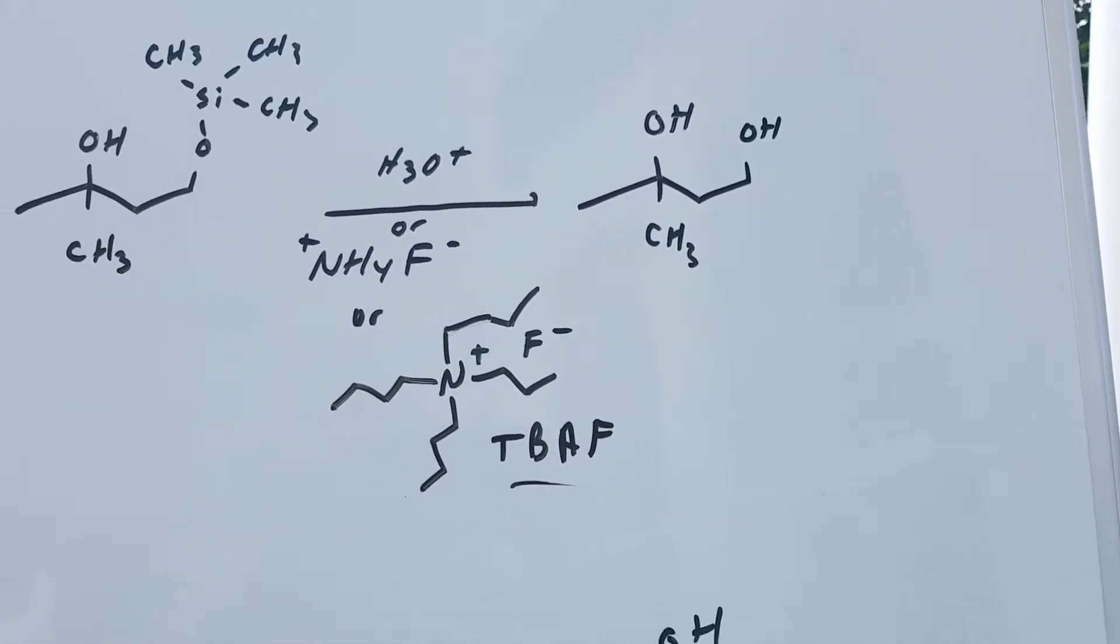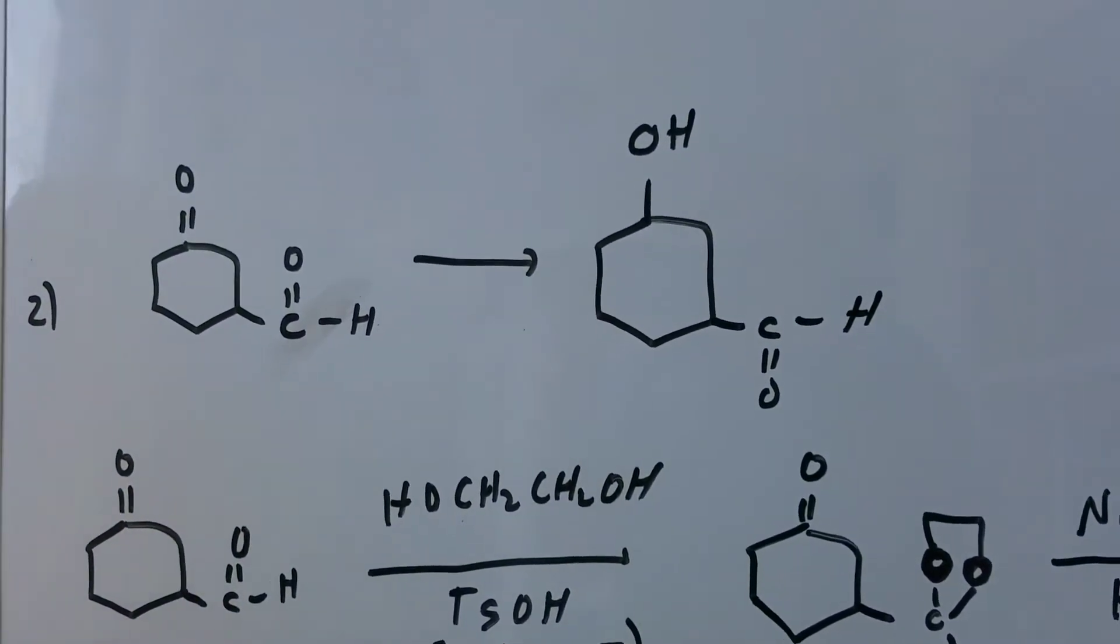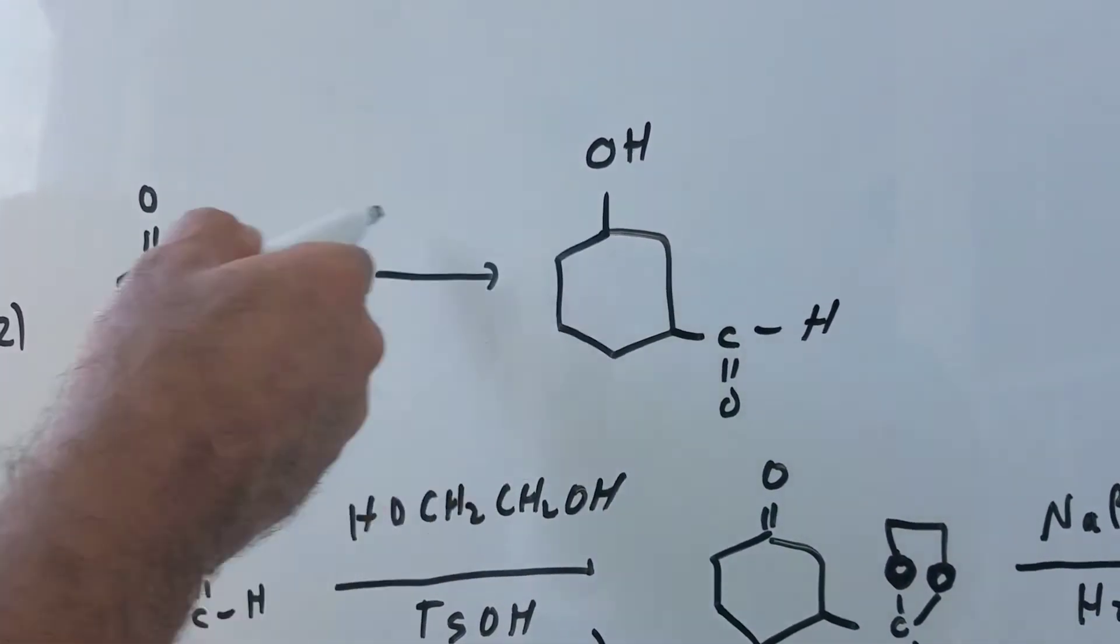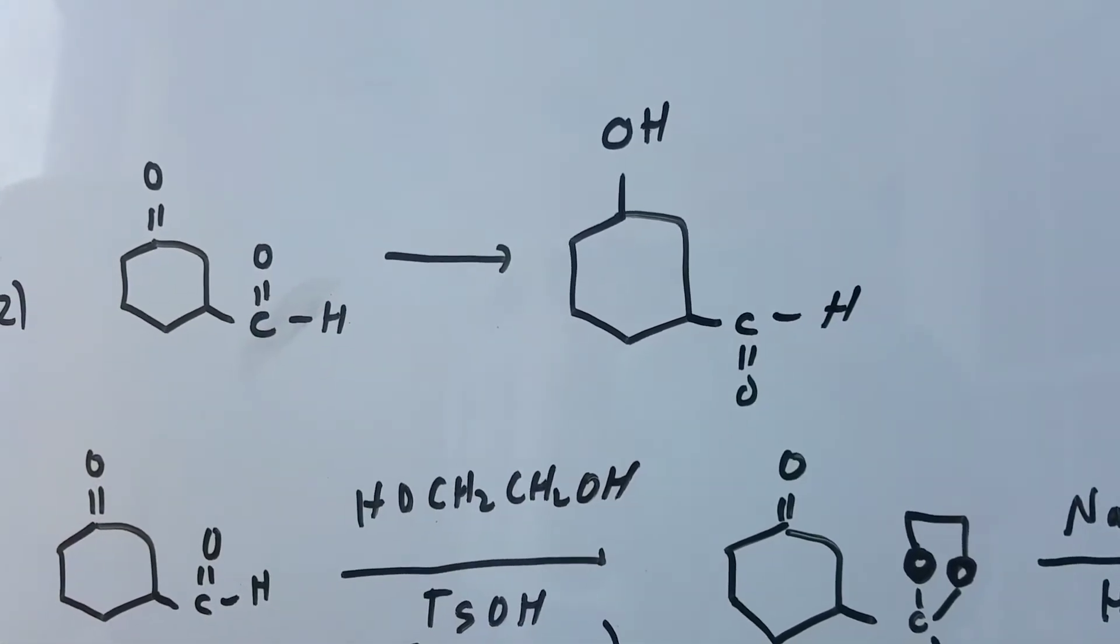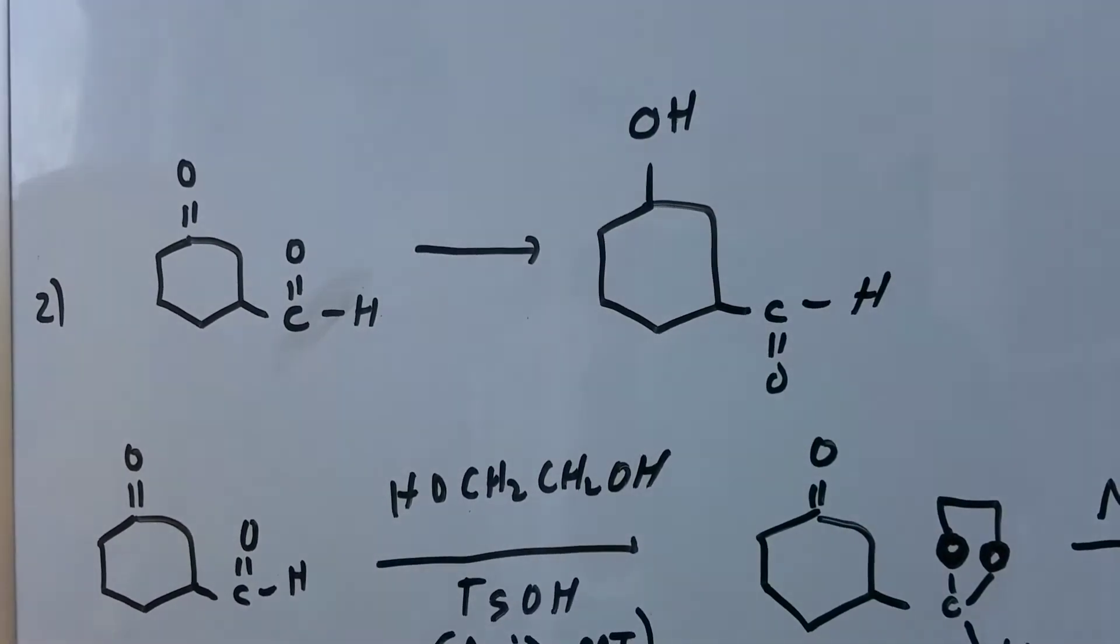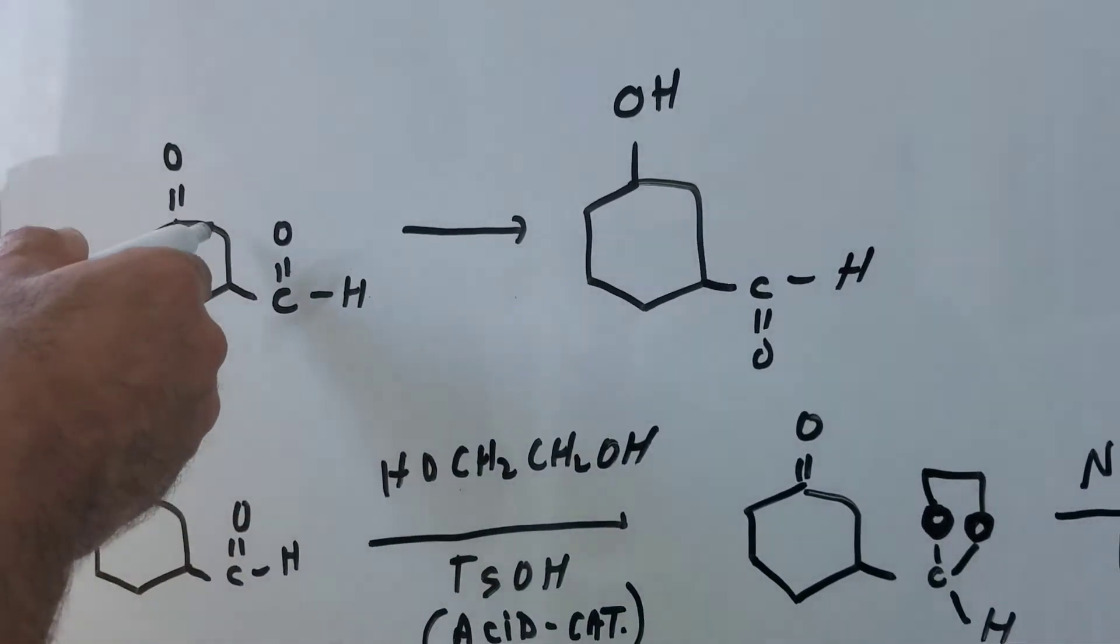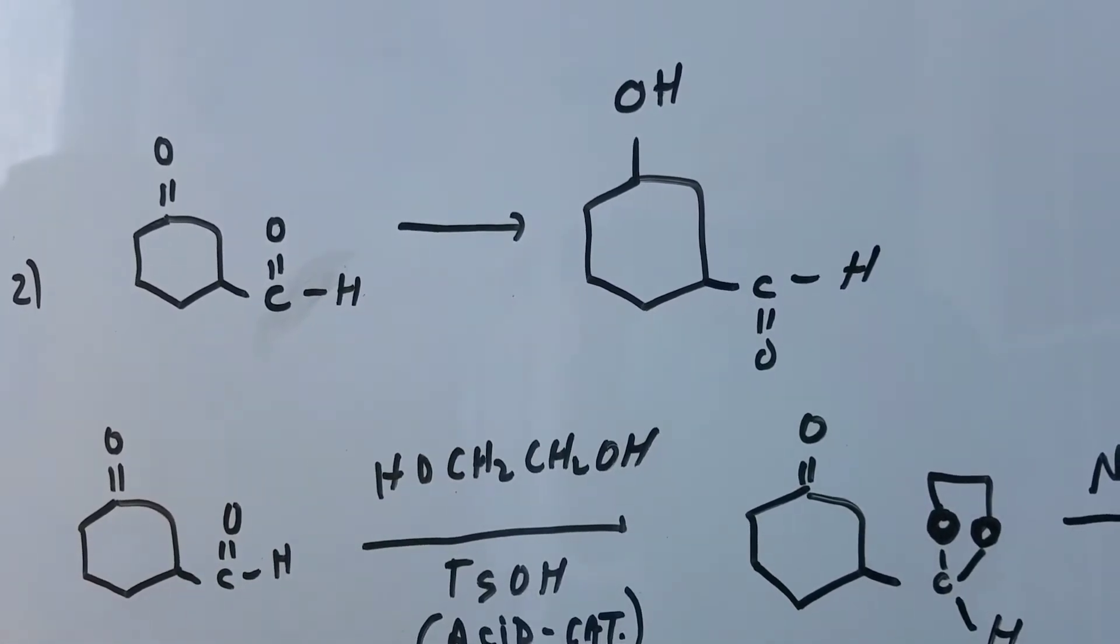Wow. If you look at the second example, this is the second type of protecting group. If you just took a cursory glance at this, you would realize all you need to do is to reduce the double bond O into an OH group. If you use the reducing agents like NaBH4 or lithium aluminum hydride, it would also reduce down the aldehyde group. So clearly the aldehyde group needs to be protected.